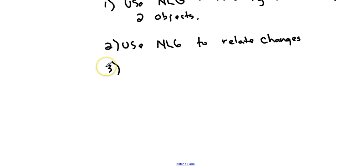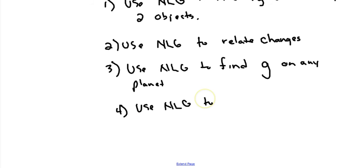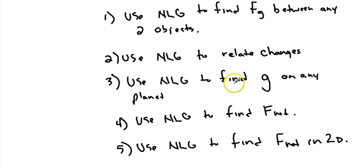You should be able to use Newton's law of gravitation to find the acceleration due to gravity on any planet or because of any object. And you should be able to use Newton's law of gravitation to find the net force, F_net, on any object. That would be like looking at the moon and earth example. And finally, you should be able to use Newton's law of gravitation to find the net force in two dimensions. Those are the five things you should be able to do after this unit. Hopefully you are.